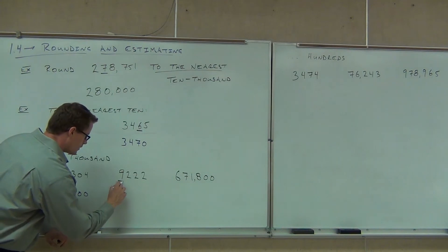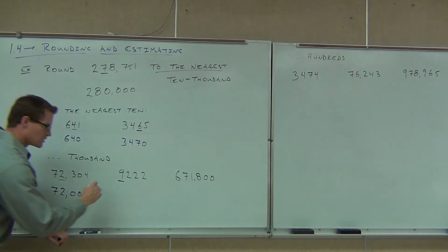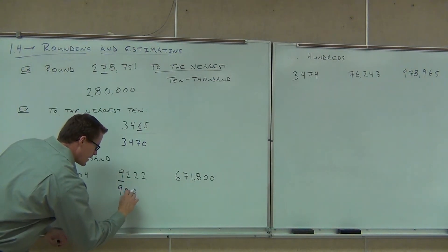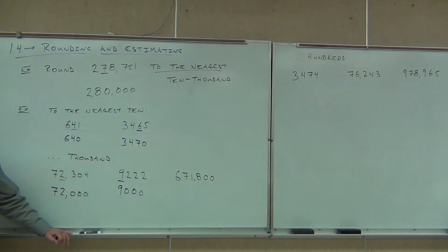On the next one, we underline our nine here. The two, again, that says, you don't leave that alone. So we should get 9,000 out of that. Did you get 9,000 out of that? Awesome.